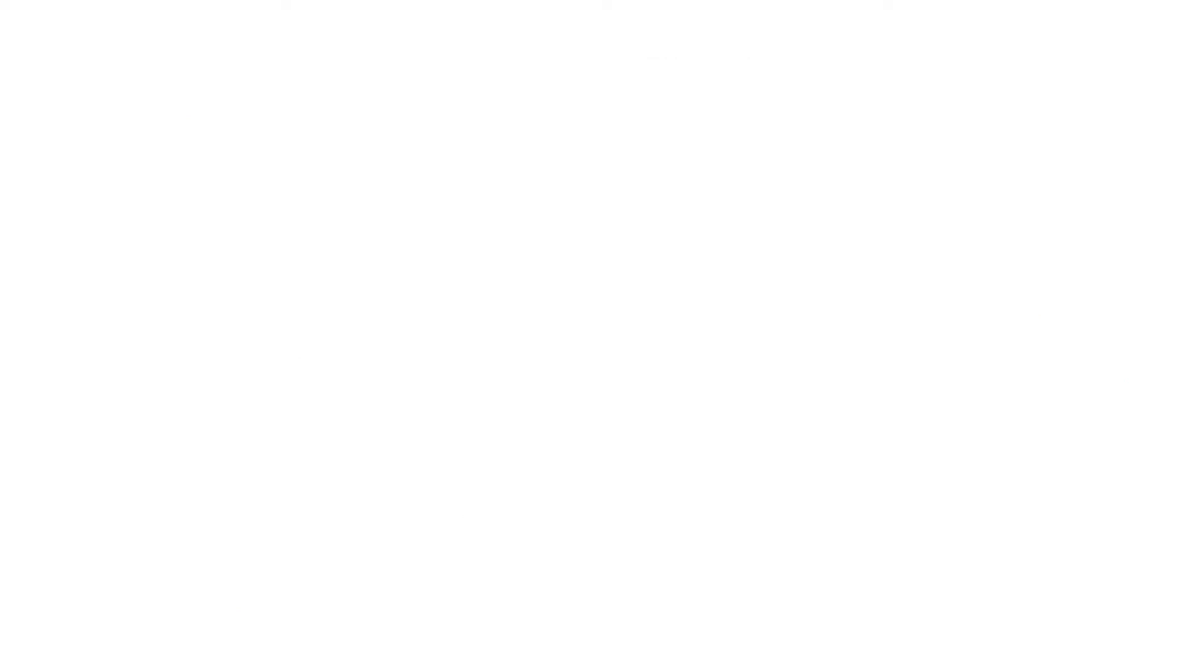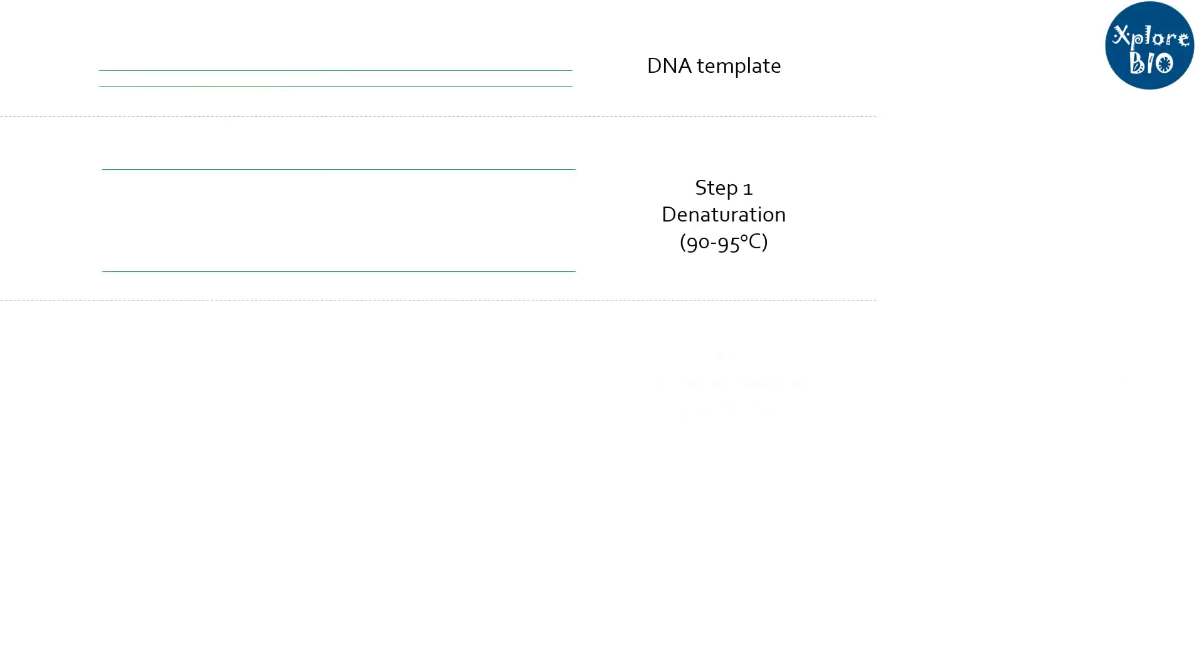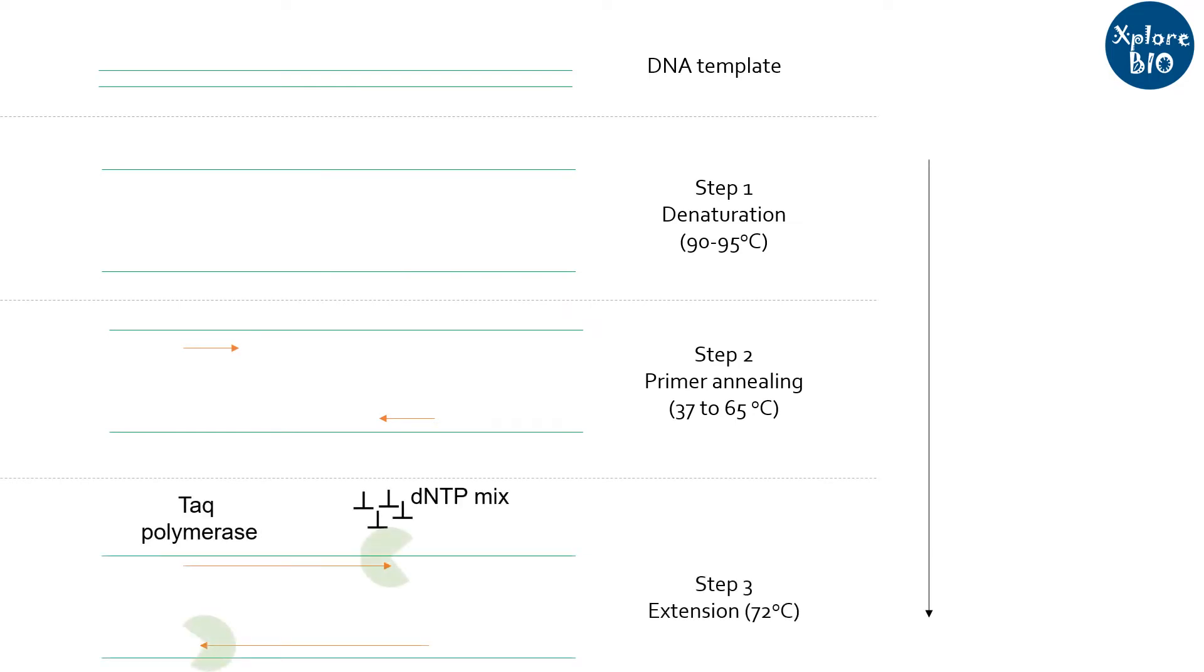PCR involves three basic steps: denaturation of template DNA followed by annealing of primers and extension to form a copy of that genomic region or fragment.